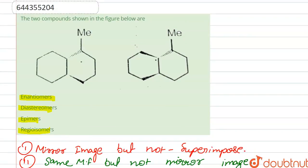Here we can see that it is a dashed line in one structure, and also a dashed line in the other, but here it is a plain line while here it is a wedge line. So it is not a mirror image — we can say that it is not enantiomers.